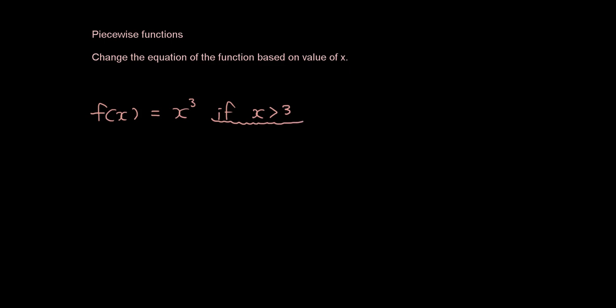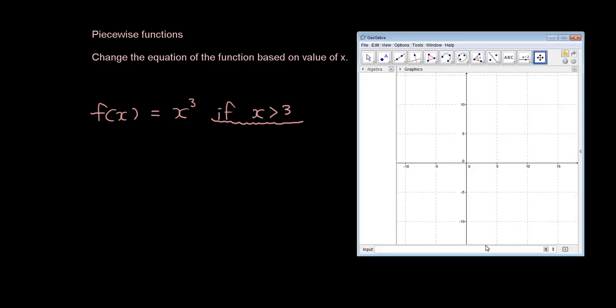Alright, so how do we draw this in GeoGebra? In GeoGebra when we normally draw a graph, for example f of x equals x cubed, this is what a cubic graph looks like. Now this is not a piecewise function yet because we haven't specified any conditions for this graph. So now if we say we only want to display this graph when x is larger than 3.